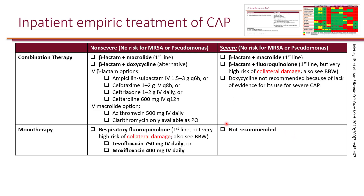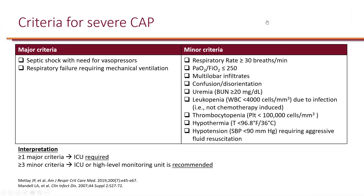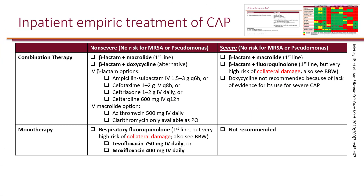When it comes to inpatient management of CAP, we need to identify severe and non-severe pneumonia. If somebody has either one of the major criteria, or at least three of the minor criteria, they would have severe CAP; otherwise they have non-severe CAP. The significance of severe CAP is the increased risk of mortality, so because patients are more likely to die, you want to make sure you have an optimal regimen for those patients.